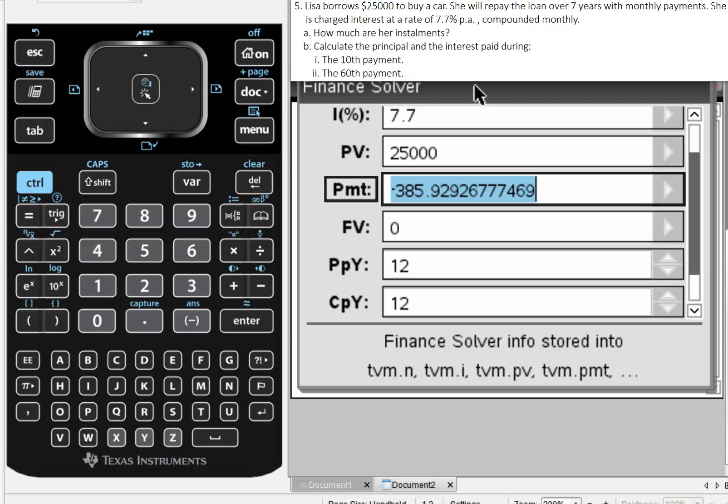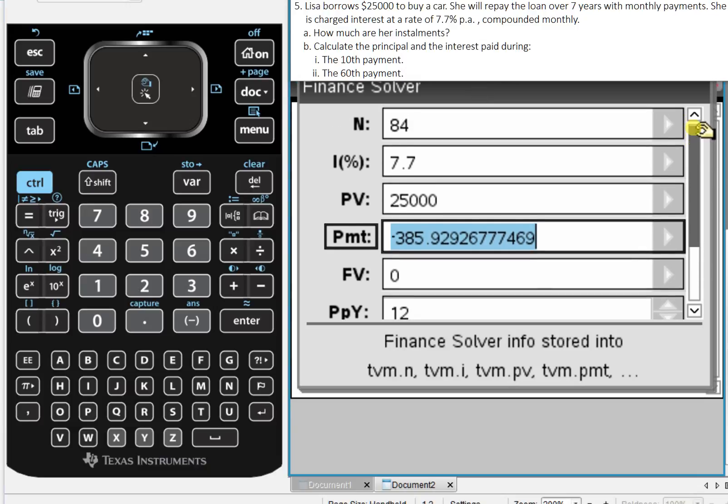But Part B asks us to calculate the principal and the interest paid during the 10th payment. So of that $385.93, how much is going towards the principal, and how much is just the interest? Using the finance solver, we need to figure out how much the principal is changing by - how much does she still owe before and after that 10th payment?